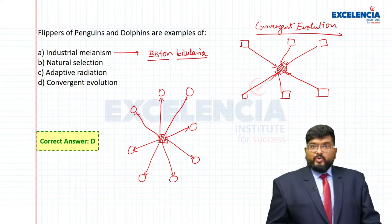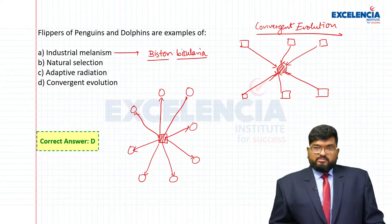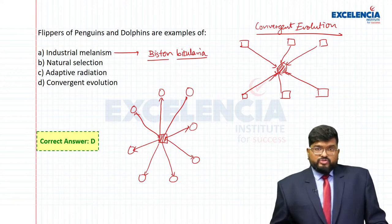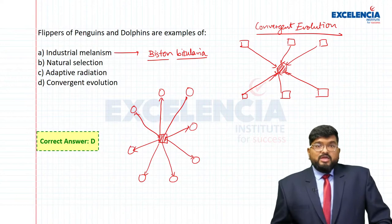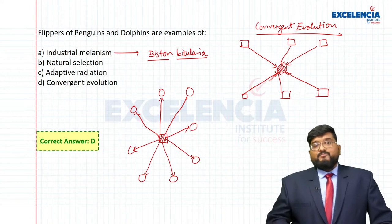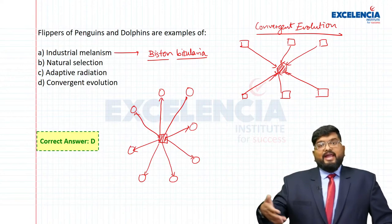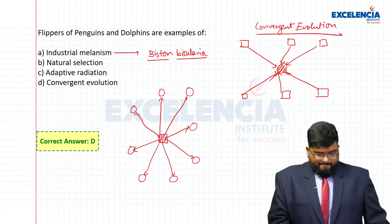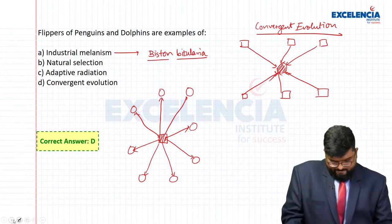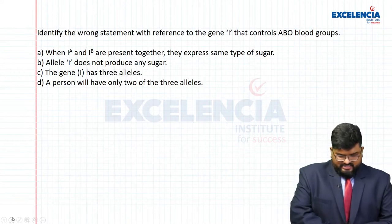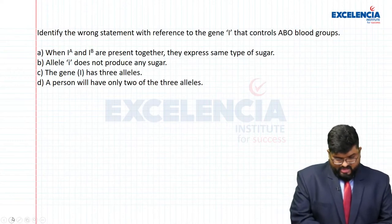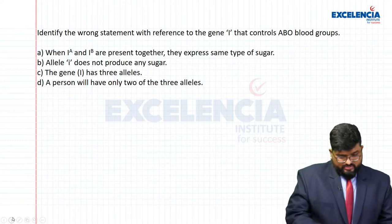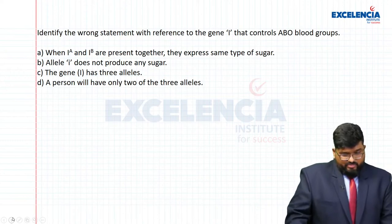As a corollary example: forelimbs of humans and bats show divergent evolution, because the bat is a flying mammal whose forelimbs have been modified to aid its function of flying — diverging from a common ancestor to perform different functions.